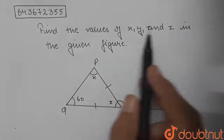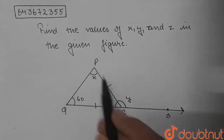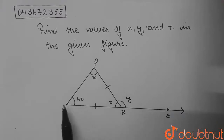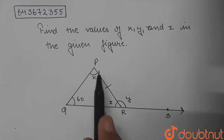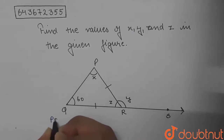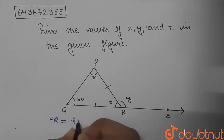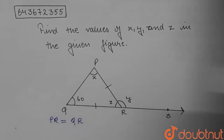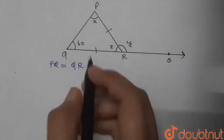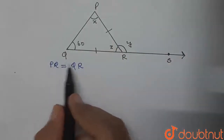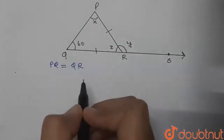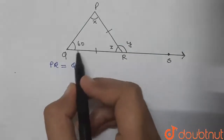We are given this triangle and a line. We are given triangle PQR, and in this triangle we are given that QR is equal to PR. So we have that PR is equal to QR, and we need to find the values of x, y and z. Looking at this triangle, from PR equal to QR we can say that these sides are equal.